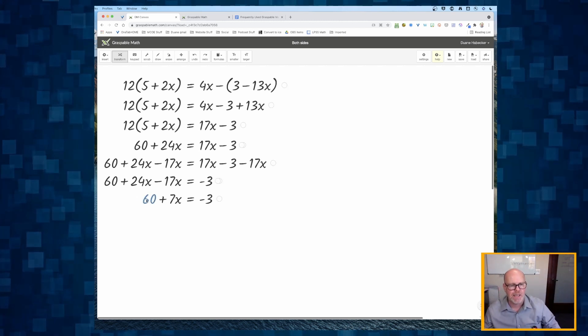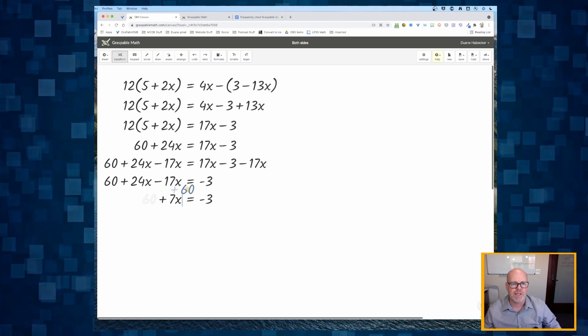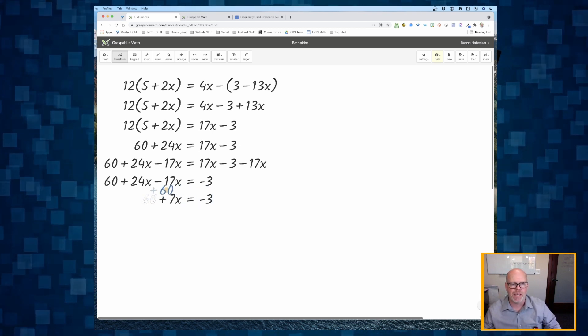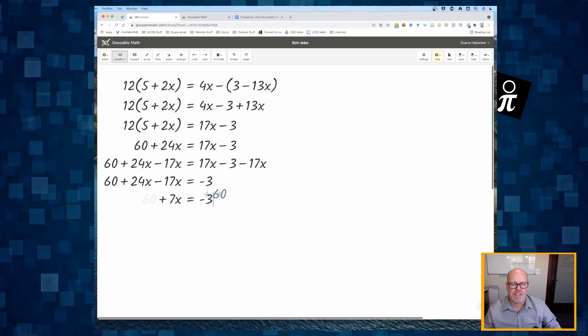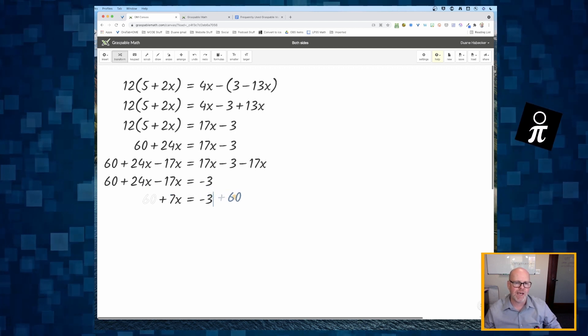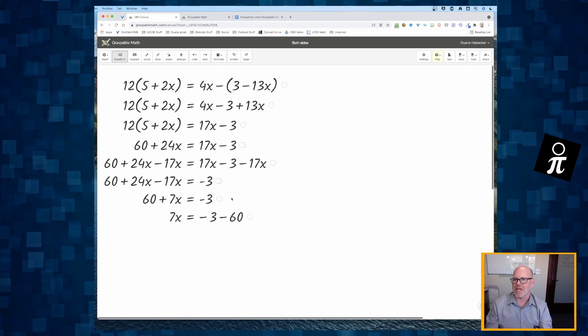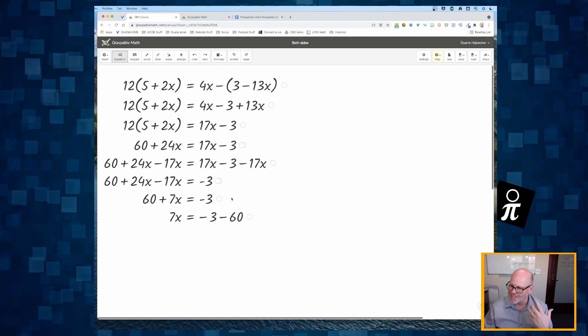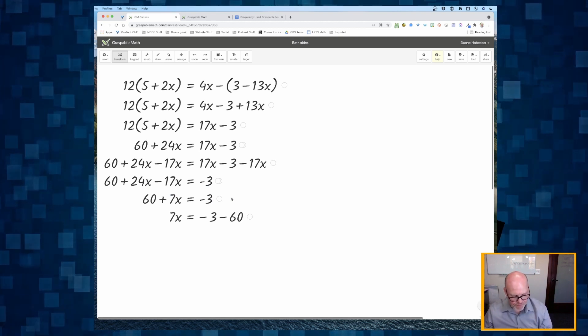select the 60 and move it across the equal sign. It starts out as a positive 60, but when I move it to the right side and let go, it becomes a minus 60.